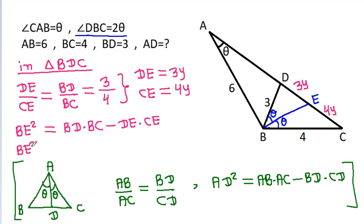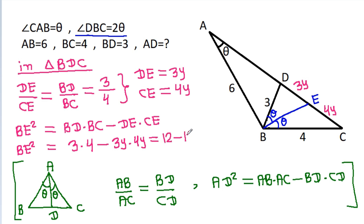So BD is 3, BC is 4, DE is 3y, CE is 4y, and their product is 12y squared. So BE will be equal to the square root of 12 minus 12y squared.